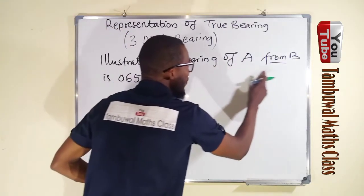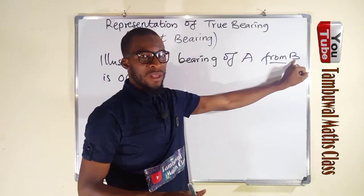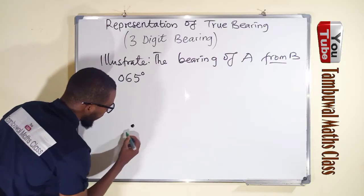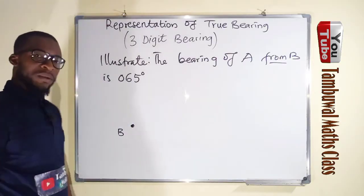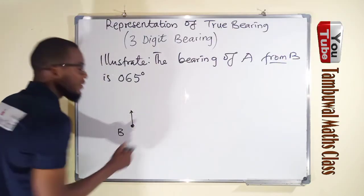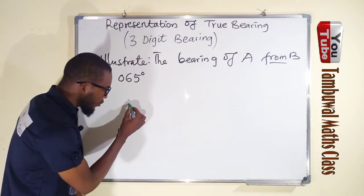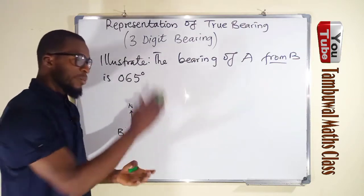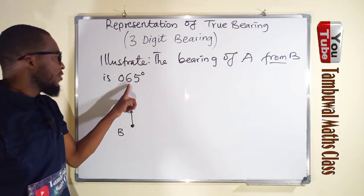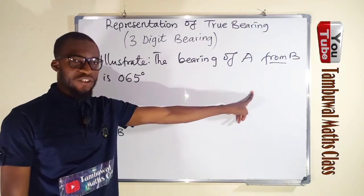And I told you this word here is very important: from. It specifies exactly where the angle is measured from. So since the bearing of A from B is 065 degrees, we are going to measure that 65 degrees from B. So the first point we need to plot is B. Suppose this point here is B. Every point has this north pole, which is upright.